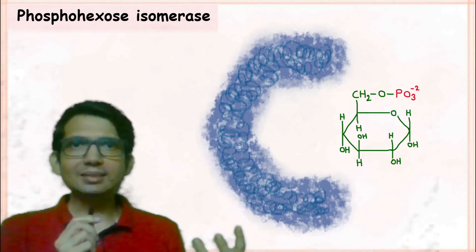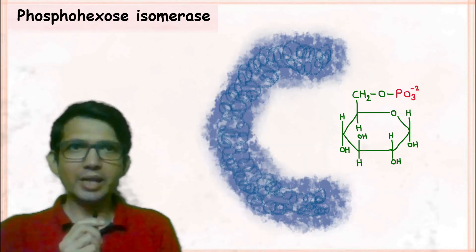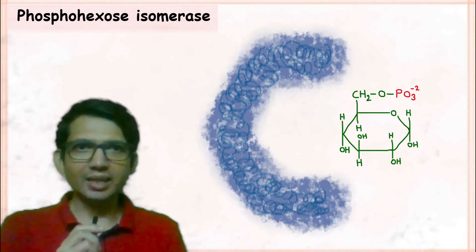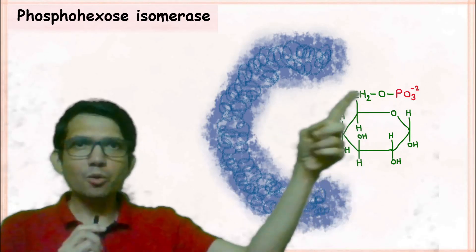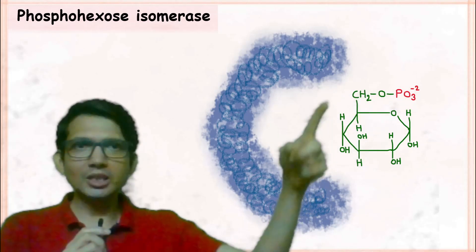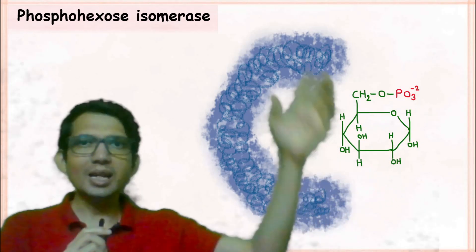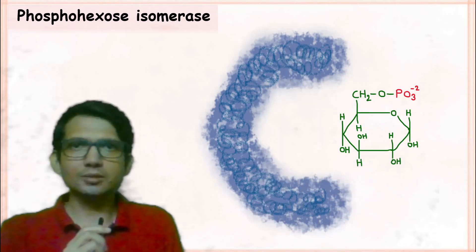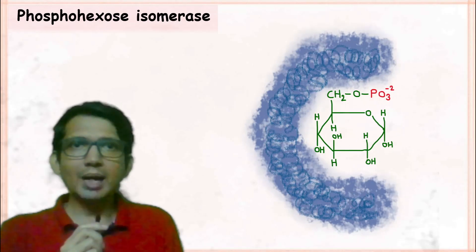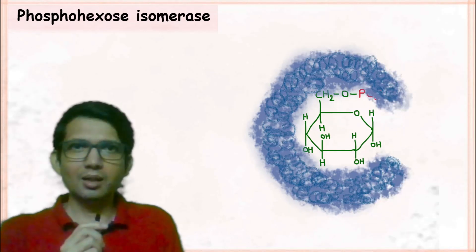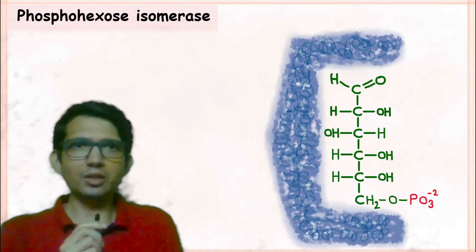As the enzyme binds with the substrate, the first thing that it does is it breaks the ring structure of glucose 6-phosphate to form a linear structure. So the enzyme binds with the substrate and converts the ring structure into a linear structure.